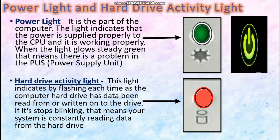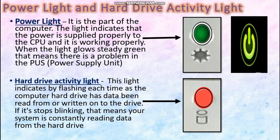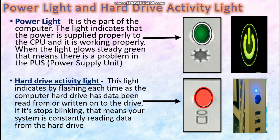The Hard Drive Activity Light is a part of the Hard Drive Indicator that flashes each time the computer hard drive has its data read from or written. For example, if I am working on a PowerPoint and every completed slide is saved, at that particular moment the Hard Drive Activity Light will blink, which indicates that the completed slide is getting saved. If the Hard Drive Activity Light has stopped blinking or is not blinking, that means the system is only constantly reading the data from the Hard Drive but no other function such as typing or saving the data is being performed.